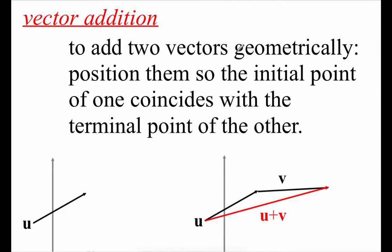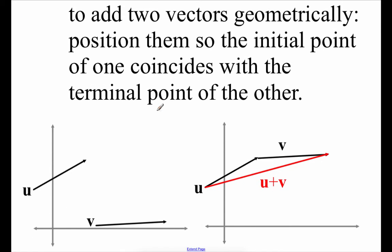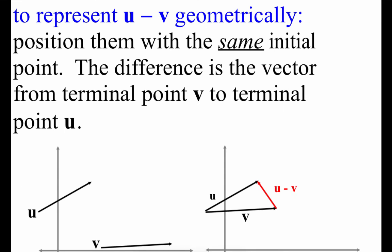Next is vector addition. To add two vectors geometrically, move one so its initial point matches the terminal point of the other. For vectors U and V, slide V so its initial point is at the end of U; the new vector U + V starts at the initial point of U and ends at the terminal point of V. For vector subtraction — U minus V — line them up so they share the same initial point; the difference is the vector running from the terminal point of V to the terminal point of U.